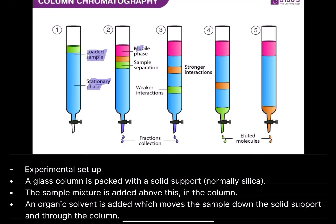The moment you add your mobile phase is when you start the clock. We're timing this because — unlike TLC chromatography where you measure distance to calculate an Rf value — here we measure how long it takes for each compound, once it separates from the sample, to fully elute out of the column and into a conical flask. That time is what we record.